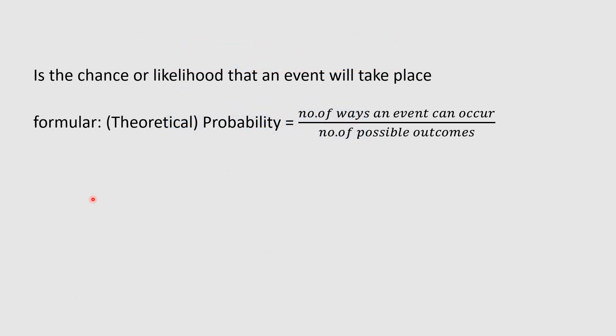Probability is defined as the chance or the likelihood that an event will take place. Our formula for probability, also referred to as theoretical probability: Probability equals number of ways an event can occur divided by number of possible outcomes.